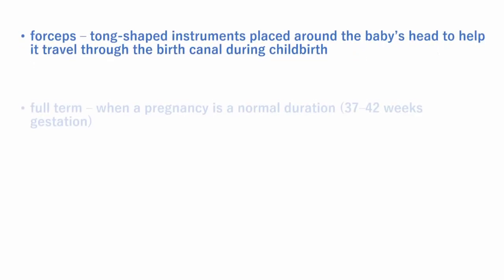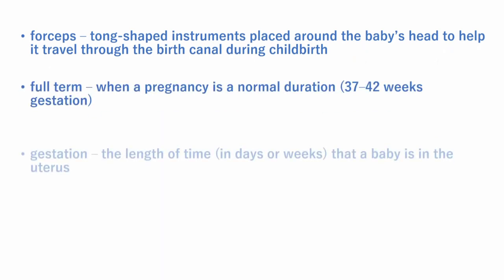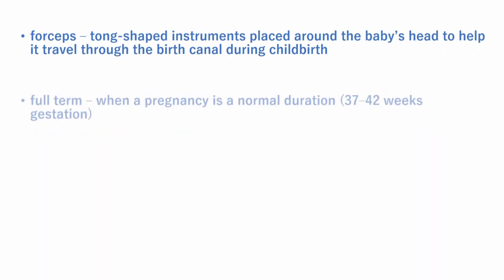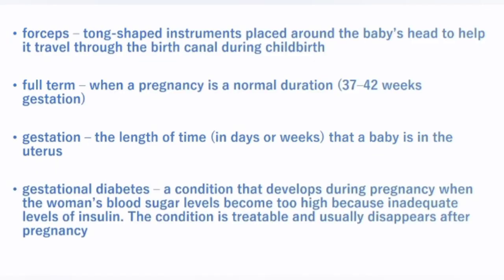Full-term is when a pregnancy reaches the normal duration of 37 to 42 weeks of gestation. Gestation is the length of time in days or weeks that the baby is in the uterus. Gestational diabetes is a condition that develops during pregnancy when a woman's blood sugar is too high due to inadequate insulin. This condition is treatable and usually disappears after pregnancy.